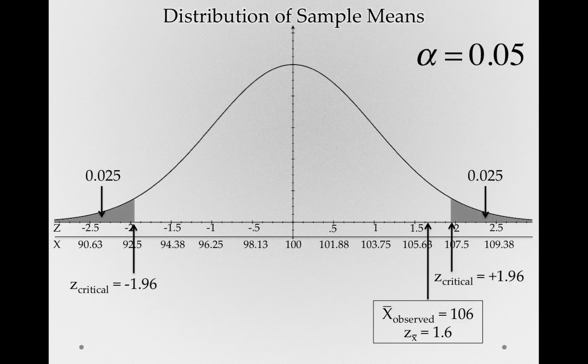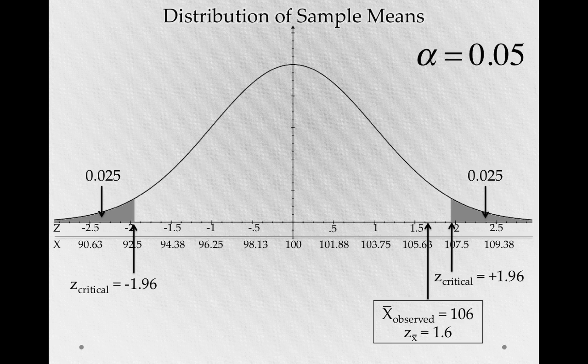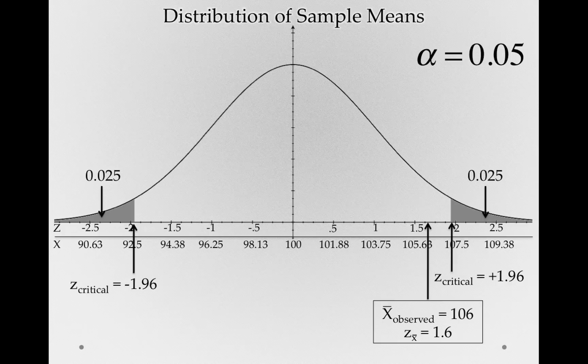In the last video, I asked you whether our two-tailed p-value for this result, a z sub x-bar of 1.6, was greater than 0.05 or less than 0.05.